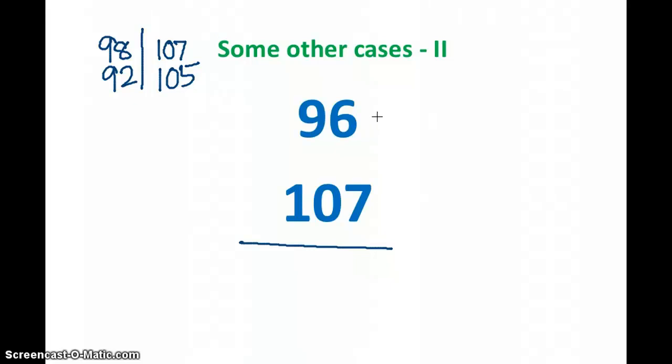It's the same technique. 96 is 4 less than 100, and 107 is 7 more than 100. Same technique, we just multiply and we get 28. After that, what we do here is 96 plus 7. We don't do minus 7 because plus 7 is more.